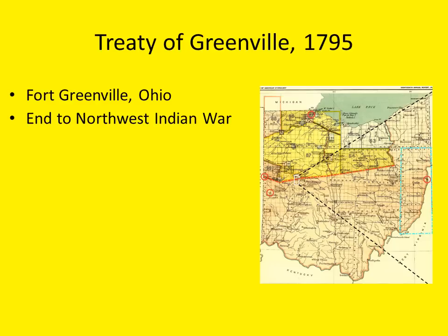Unfortunately, the ink was barely dry on the document before white settlers began violating the ban on new settlements. The northern roughly one third of present-day Ohio and parts of Indiana was supposed to be off limits under the peace agreement.